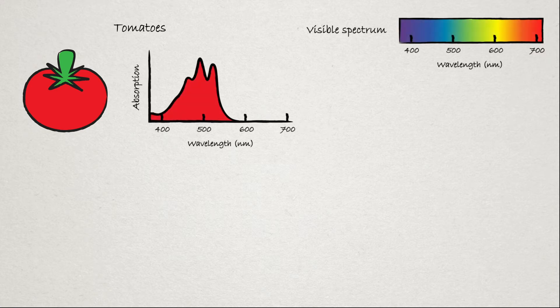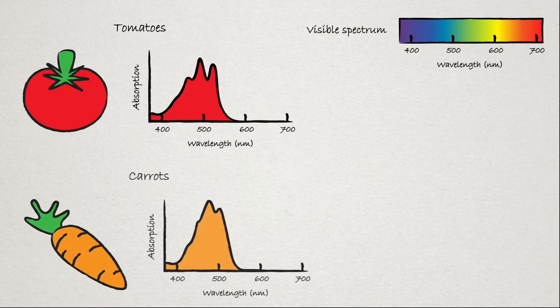So let's look at a few everyday objects, starting with a tomato. This is the absorption spectrum of a tomato. When we compare this to the visible spectrum, we see that it's red because it mainly reflects red light while absorbing other colors. But when we look at a carrot, it absorbs a little bit more blue light and reflects a little bit more green light than tomatoes. But both carrots and tomatoes reflect the same amount of red and orange, yet they appear to be completely different colors. Why is this?